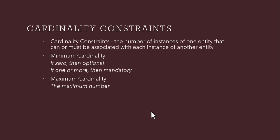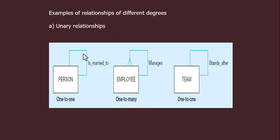Cardinality constraints — a cardinality constraint is the number of instances of one entity that can or must be associated with each instance of another entity. Minimum cardinality: if it is 0, then one or more than one is mandatory. If the relationship cardinality on one side of the entity is optional then it is 0; otherwise it is mandatory. Maximum cardinality is the maximum number.